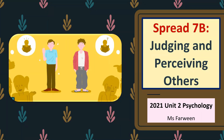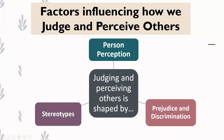Today we're starting with spread 7B, continuing our understanding of social psychology and looking at how we judge and perceive others — how we make judgments of people in our social environment, whether that be our friends, family, or strangers. The factors that influence this are person perception, stereotypes, and prejudice and discrimination. A lot of this knowledge is kind of like common sense, but we're putting names or labels to these concepts now.